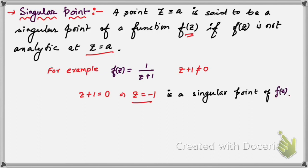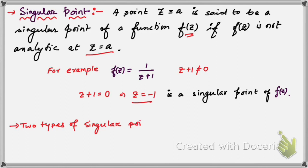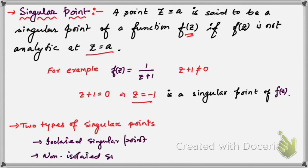I hope you know what an analytic function is — we have already discussed that, and links of previous lectures are in the description box. Now we are going to talk about two types of singular points: one is isolated and one is non-isolated.